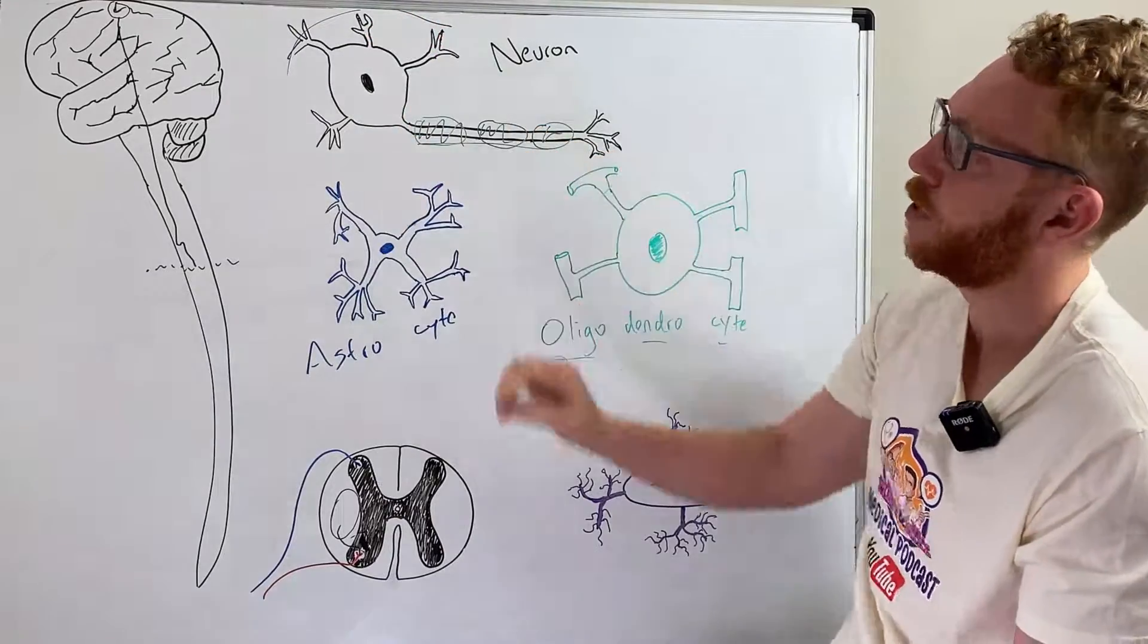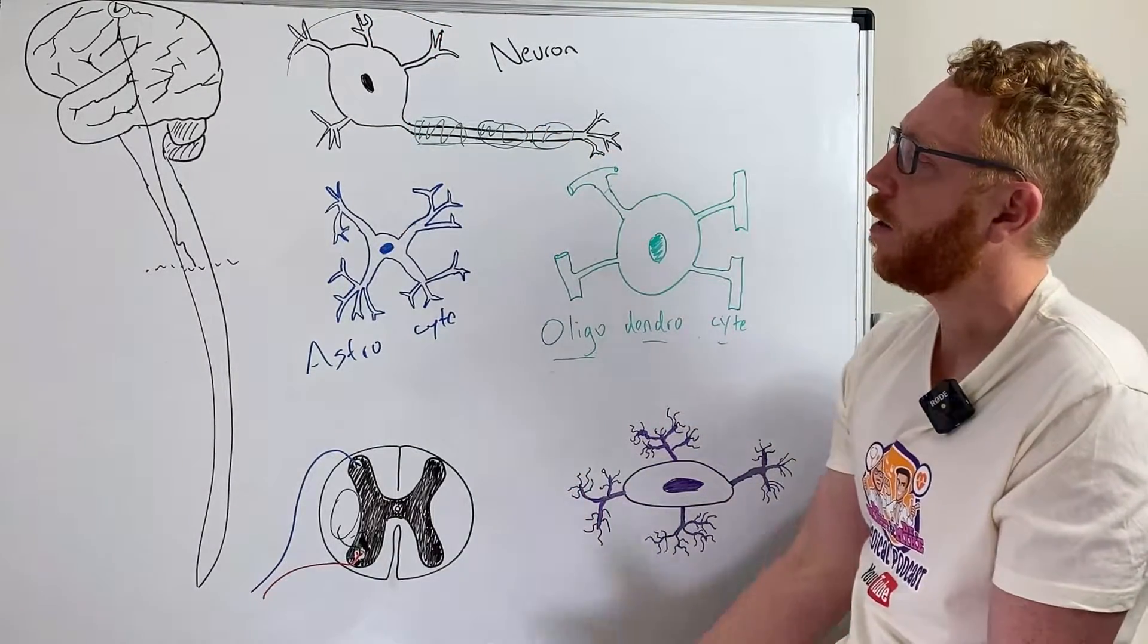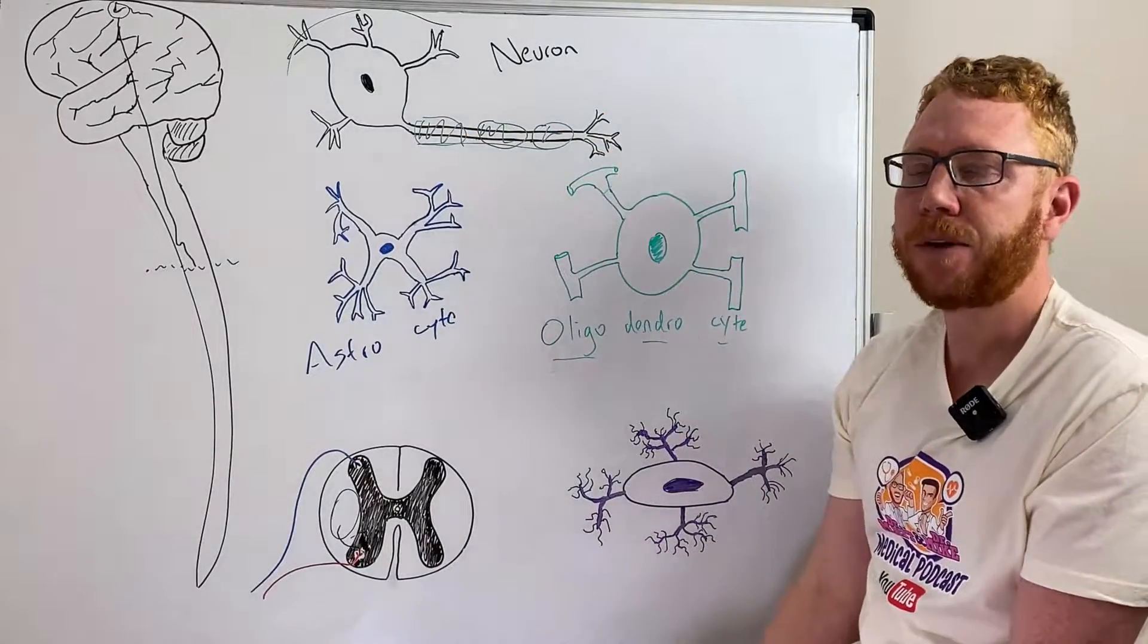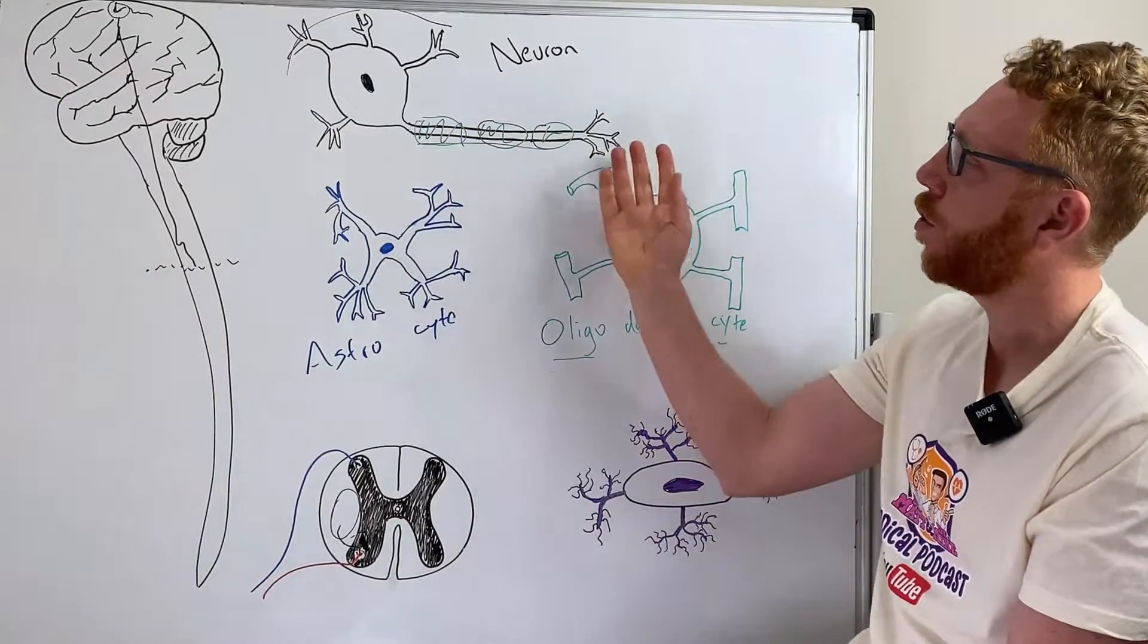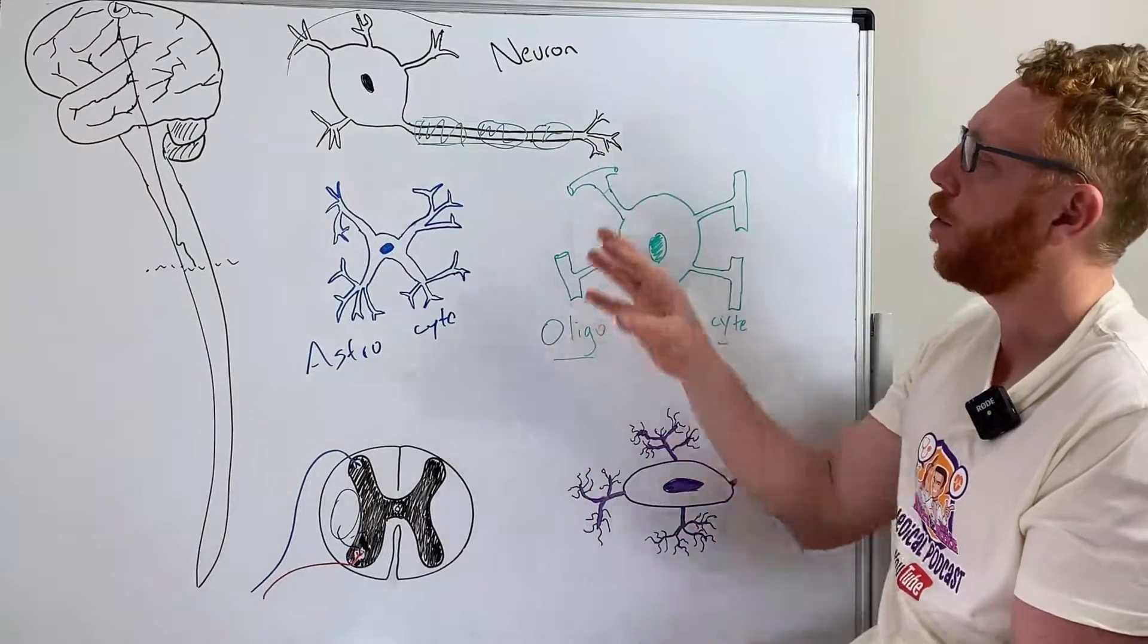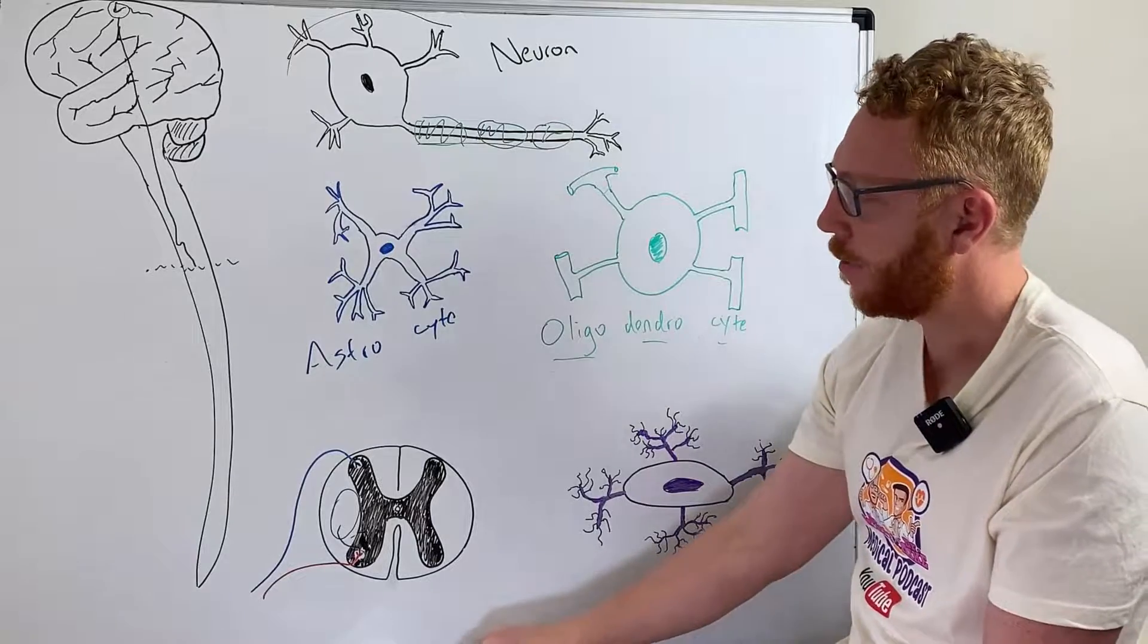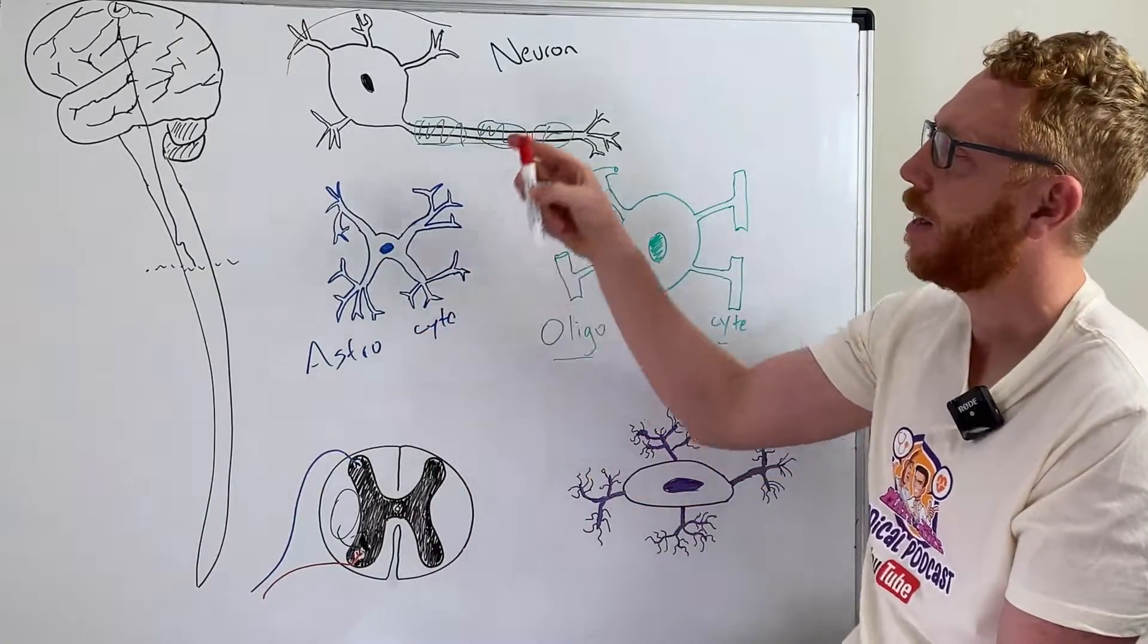It really maintains the chemical environment for the neuron, to make sure that there aren't too many chemicals building up, or too many neurotransmitters, or it can regulate what's coming from the blood into the neurons. We call this the blood-brain barrier.